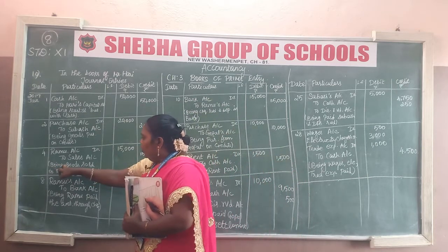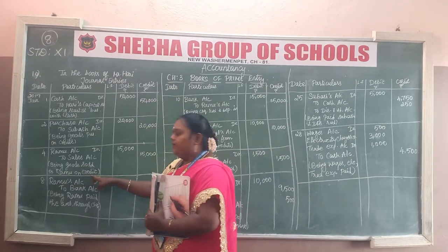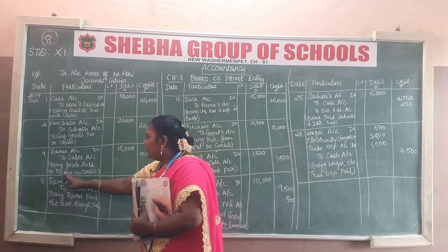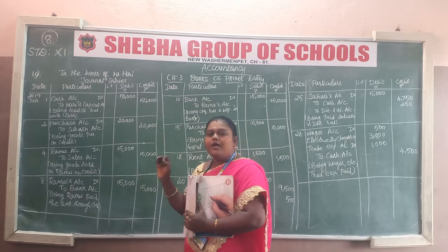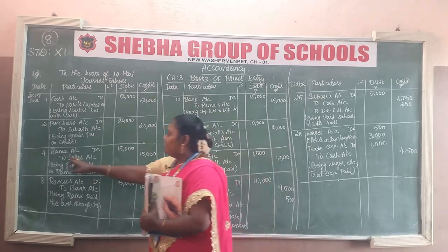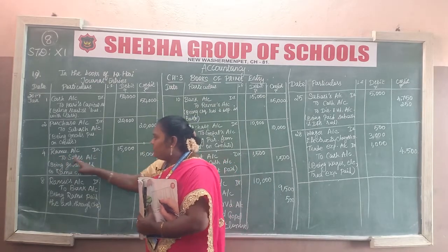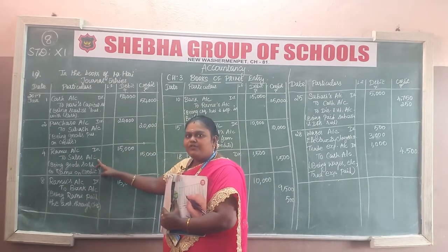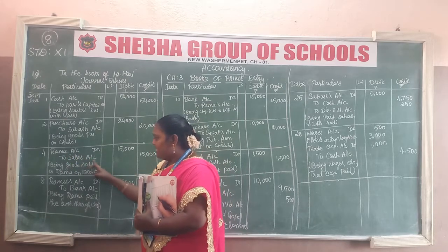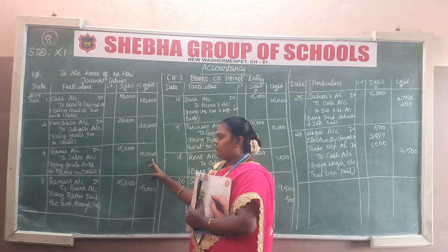Next transaction: goods sold to Ramu on credit. The entry is: Ramu account debit to sales account. The sales account is credited. The amount is Rs. 15,000.